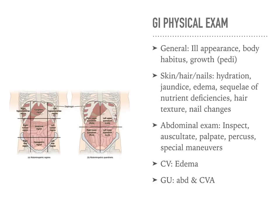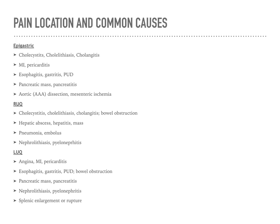When we do our physical exam, we want to look at the entire appearance and their body habitus. Assess their skin, hair, and nails. Are they jaundiced? Is there edema, dependent edema? Do they have ascites? Is the abdomen scaphoid? Look for any abnormalities. When assessing for pain, make sure you understand the location, the anatomical structures that surround that location, and then think about which differentials may be associated with that.